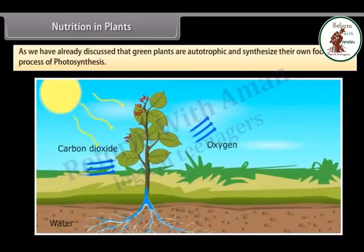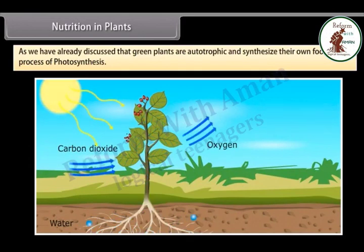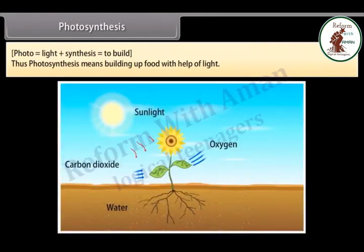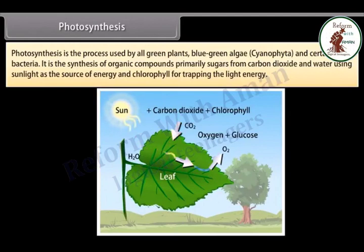Green plants are autotrophic and synthesize their own food by the process of photosynthesis. 'Photo' means light and 'synthesis' means to build, so photosynthesis means building up food with the help of light. Photosynthesis is the process used by all green plants, blue-green algae, and certain bacteria. It is the synthesis of organic compounds — primarily sugars — from carbon dioxide and water, using sunlight as the source of energy and chlorophyll for trapping the light energy.